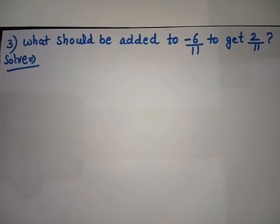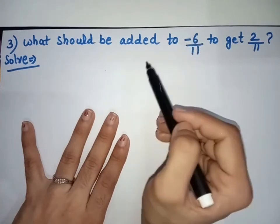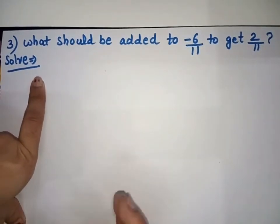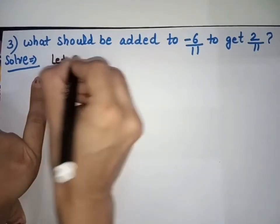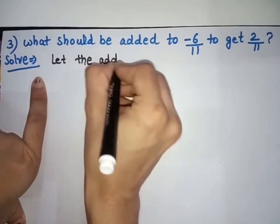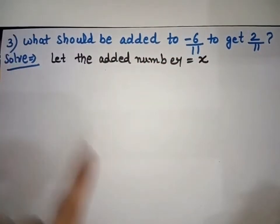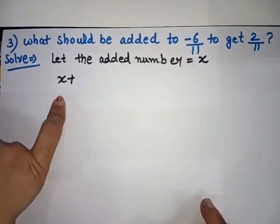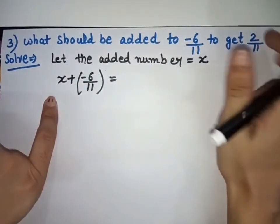Third sum: What should be added to minus 6 over 11 to get 2 over 11? We need to find which number, when added to minus 6 over 11, gives 2 over 11. First, let the added number be x. So we write: x plus minus 6 over 11, written in bracket because it has a minus sign, equals 2 over 11.